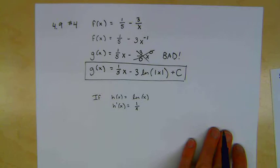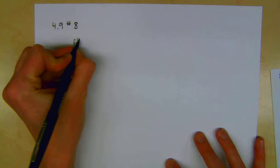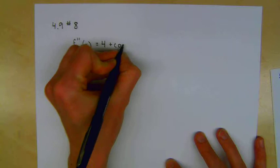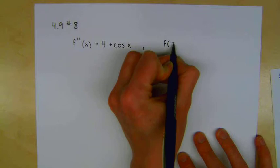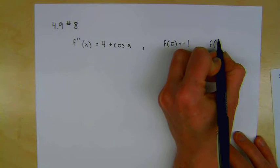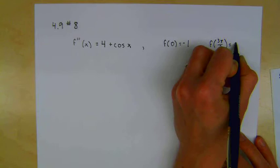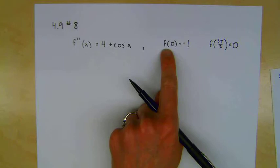The next problem is 4.9 number 8. So this looks like some of the other problems, but it's actually a little unconventional. For this one, we're given what the second derivative is. The second derivative is 4 plus cosine x, and then we're going to be given some initial values. We're given that f(0) is equal to negative 1, and we're also given that f of 3π/2 is equal to 0. Notice that it doesn't give you any initial values for your first derivative, but that's okay. It turns out that we'll be able to solve for our constants anyway.